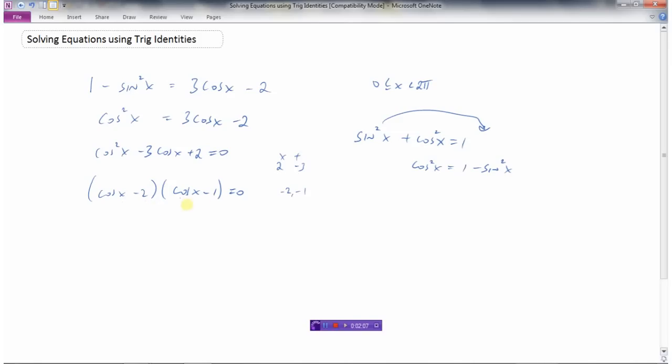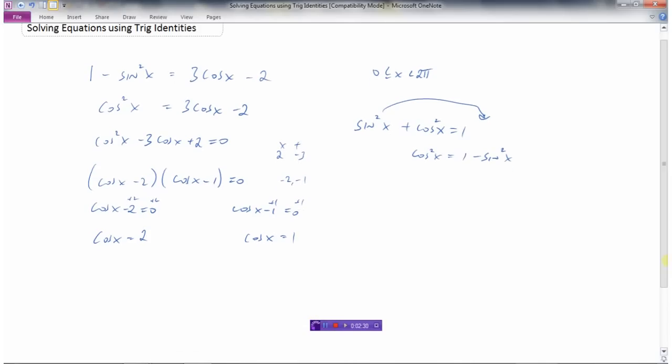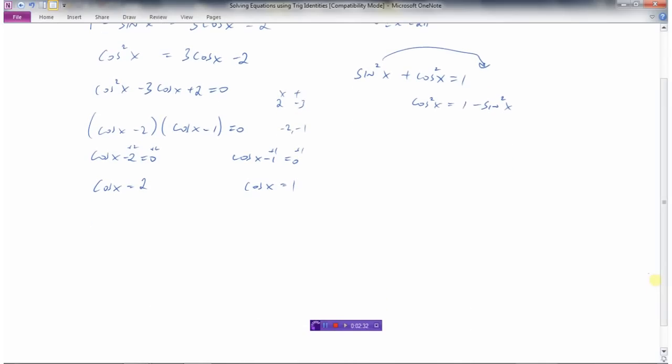Now if I have this times this equals 0, that means either this one equals 0 or this one equals 0. Isolating for cos x, I get cos x = 2 on the first one. On the second one I add 1 to both sides and get cos x = 1. So now I have my equation ready to solve.